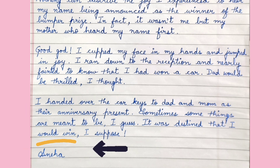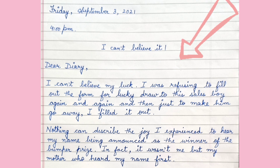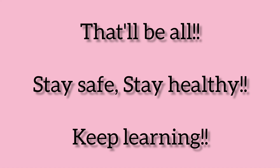At the end, we can see that the first name of the person who has written the diary is mentioned at the bottom. That concludes the diary entry. In the given example, we can see that the diary entry is written in simple past tense and the first person is used. All these points should be taken into account when writing a diary entry. That will be all for today's class. Until we meet again, stay safe, stay healthy, and keep learning.